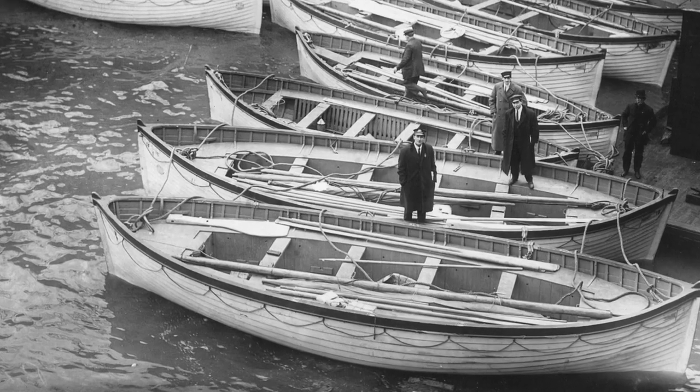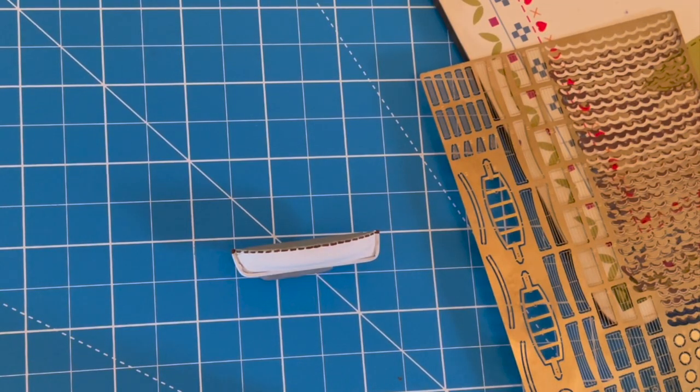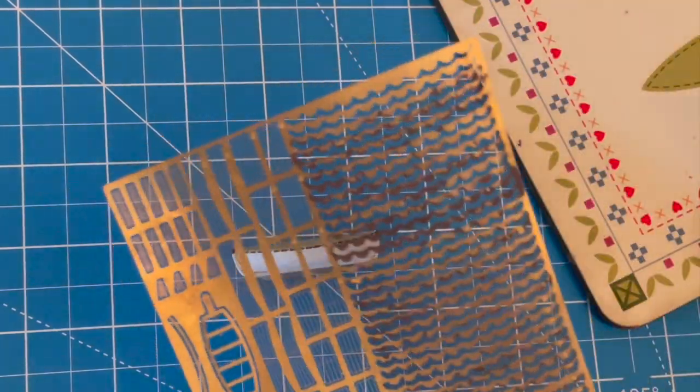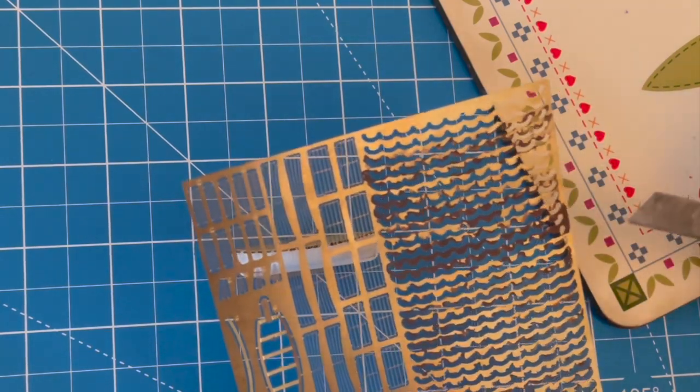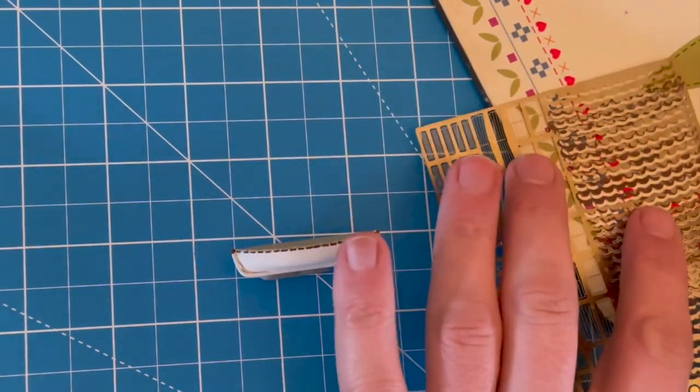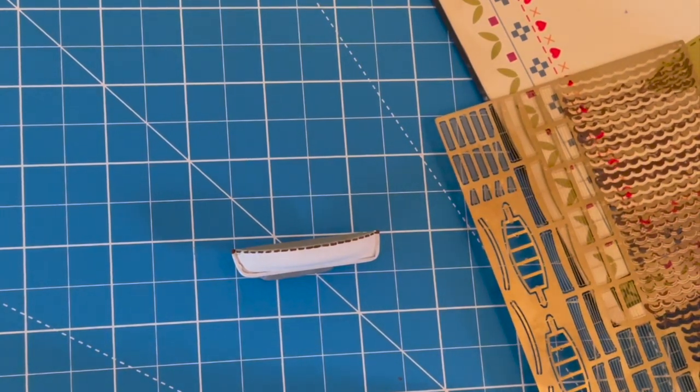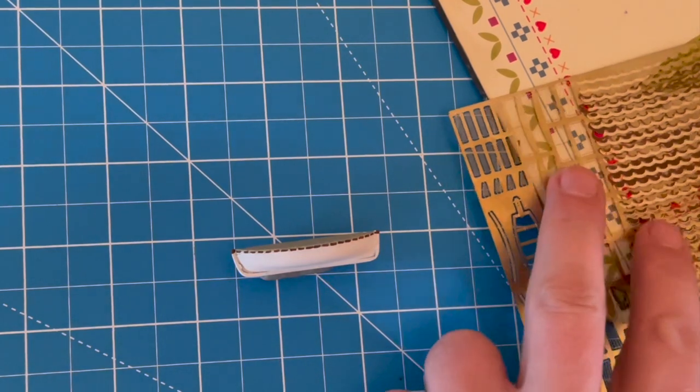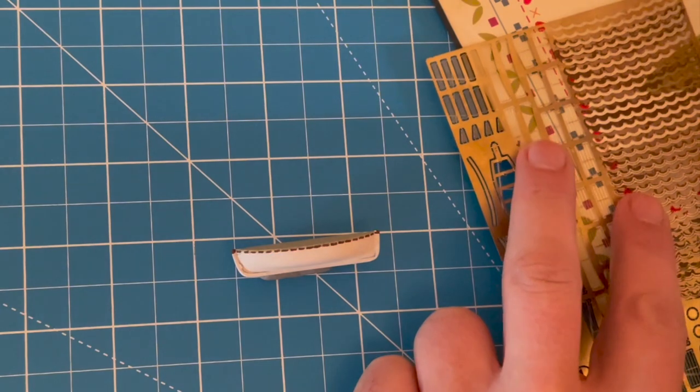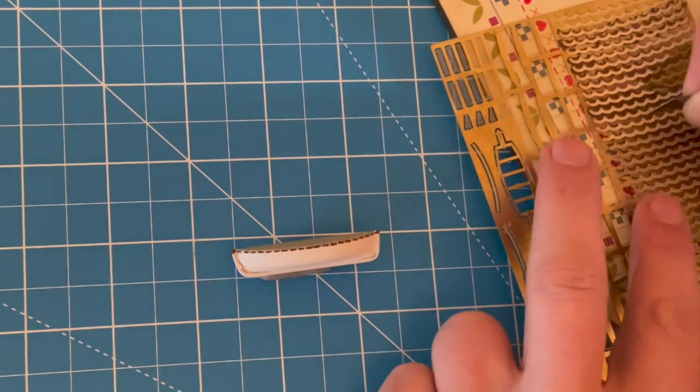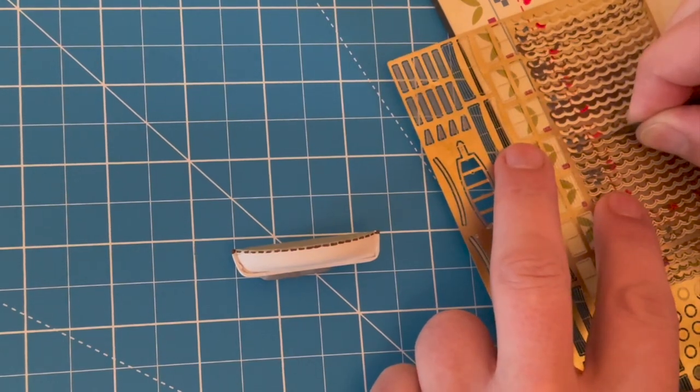So now I'm going to add the photo etch ropes along the side of the lifeboat. These are very tricky to do, very fiddly. And I've already painted the ropes here, just painted them brown. And then I'm just going to snip them off. The best way to remove photo etch is just get a hard board or piece of tile or something, and then I'm just going to literally just snap them off or use a very sharp knife, just go in where they're attached.